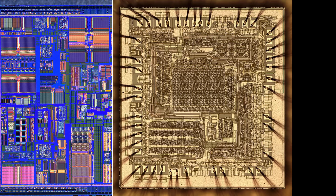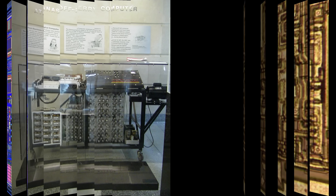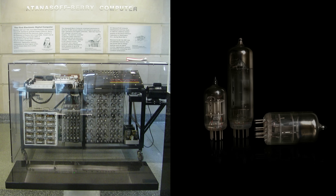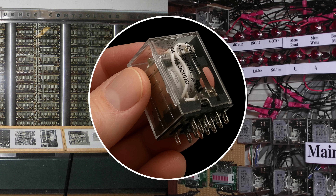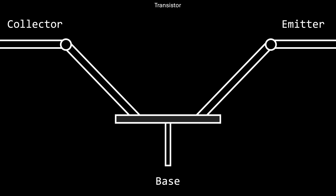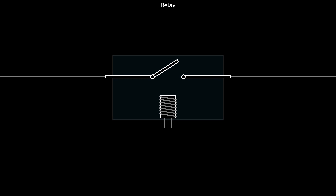Big thanks to Let's Get Rusty for supporting the channel. And now, back to the video. We all know modern computers are built with transistors, but back in the early days, before transistors were even invented, computers used much larger components, like vacuum tubes or relays. Remember, a transistor is basically an electronic switch. When you apply voltage to its base terminal, it lets electricity flow from the collector to the emitter.